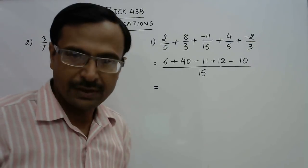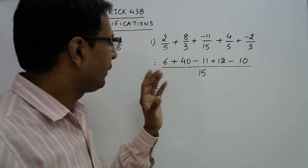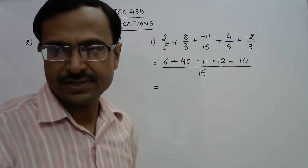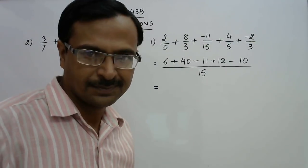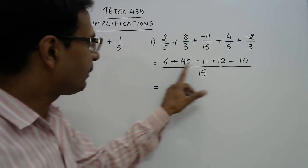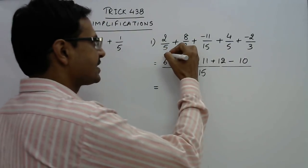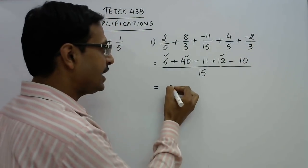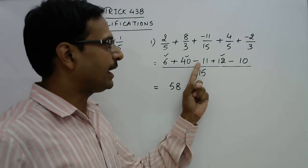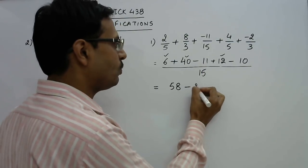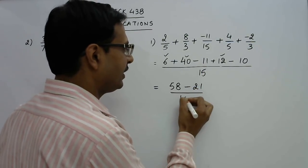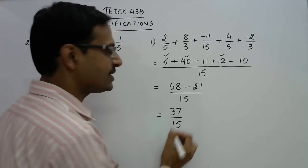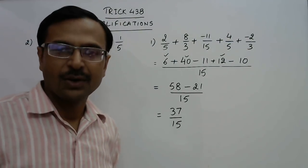And now the problem is very simple because it just meets the basics of integers. So all the positive numbers you can just add them together. What do we get by adding all the positive numbers? This is 6 plus 40 that is 46 and plus 12 this is 58 and the negative numbers minus 11 and minus 10 that is minus 21. And in the denominator we have 15. So we get the final answer 58 minus 21 is 37 upon 15 which is the correct solution of this question.